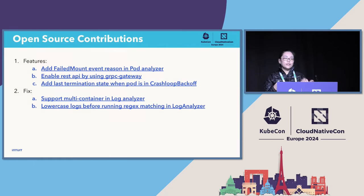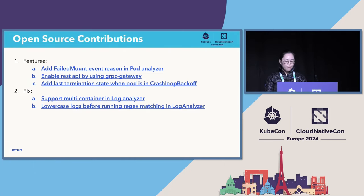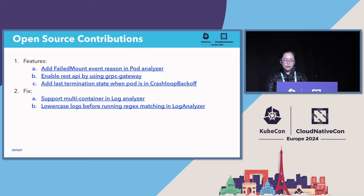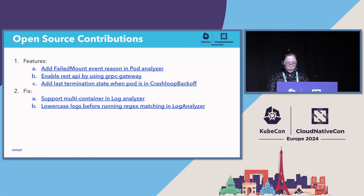Intuit is also actively contributing back to the K8sGPT upstream. There are some features and fixes we have worked on. On the roadmap, we're thinking we can add more AWS integrations to get details of EC2 instance status, describe the EKS API server status, and even VPC configurations, which can help us troubleshoot AWS issues in our cluster.